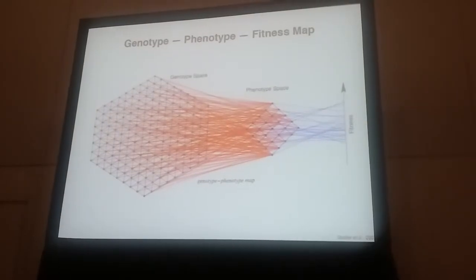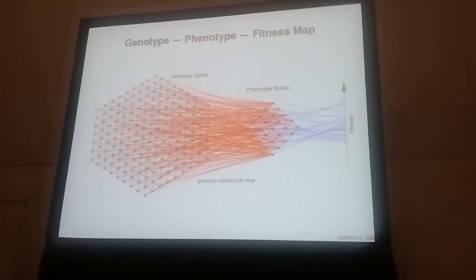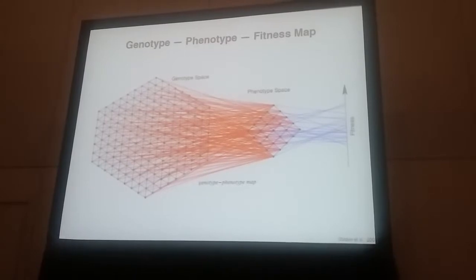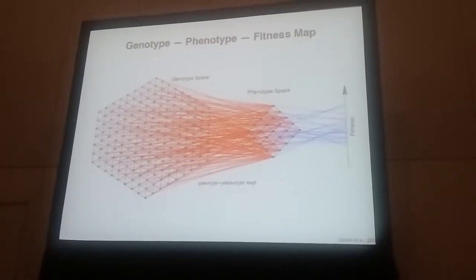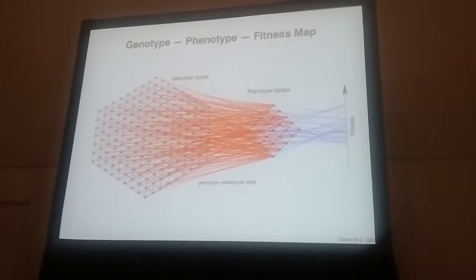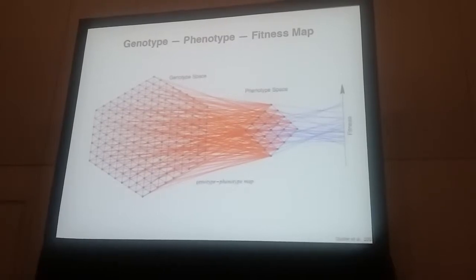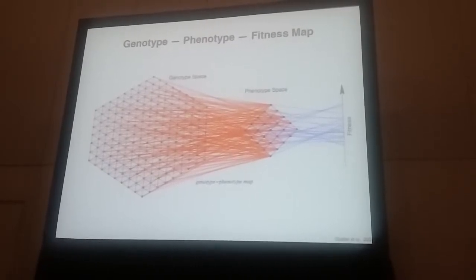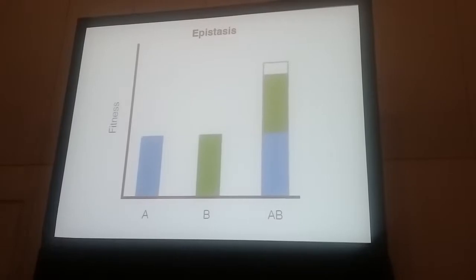But of course, that's not the case. For the most part, the relationship between genotypes to phenotypes and phenotypes to fitness is not additive. For the rest of this talk, I'm going to go directly from genotype to fitness. So when this is not additive, we refer to this as epistasis.